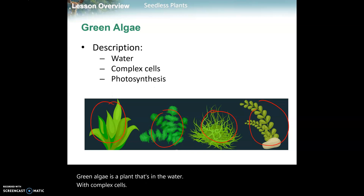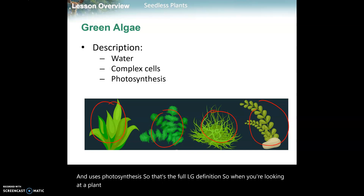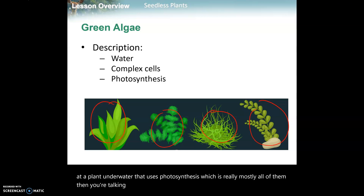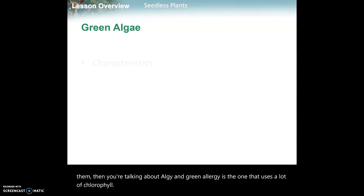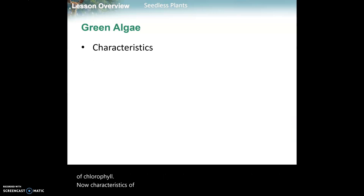Green algae is a plant that's in water with complex cells and uses photosynthesis. That's the full algae definition. When you're looking at a plant underwater that uses photosynthesis - which is really mostly all of them - then you're talking about algae. Green algae is the one that uses a lot of chlorophyll.